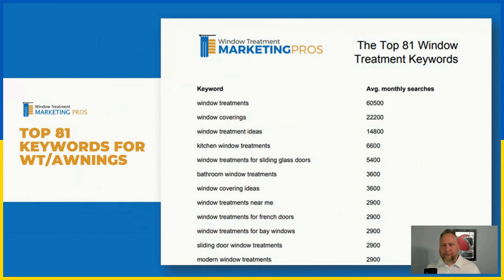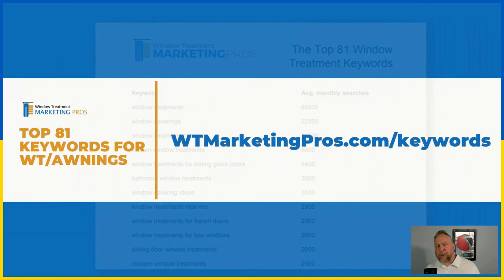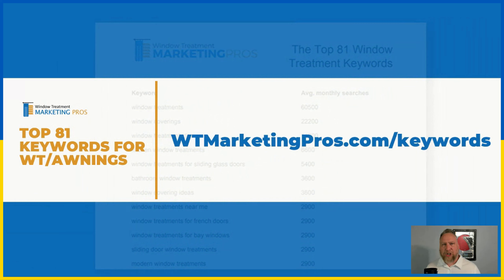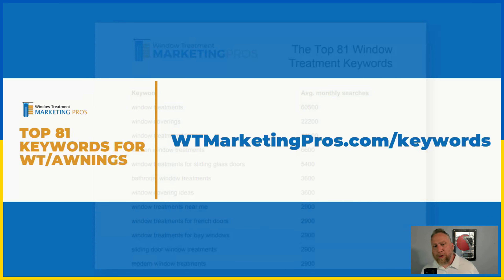That's trends.google.com. Now, when it comes to keywords, we've actually pulled the top 81 keywords for the window treatment industry and put them on a website you can access absolutely free — no opt-in, no email required. Go to wtmarketingpros.com/keywords and download that entire list for free. Grab those keywords because it will get you on your way and save you time on keyword research.